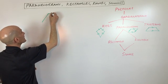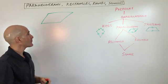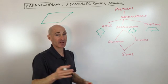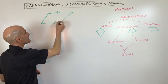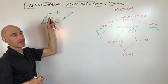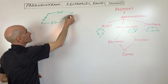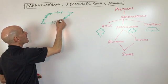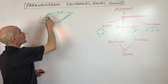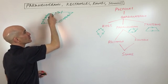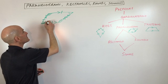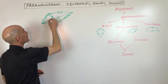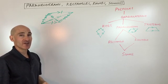A parallelogram looks something like this. You want to memorize these different properties, but by understanding how all the figures are related to each other, you can reduce the number of things you have to remember. So: opposite sides are parallel, opposite sides are congruent, opposite angles are congruent, consecutive angles are supplementary and add up to 180 degrees, and the diagonals bisect each other — they cut each other in half.